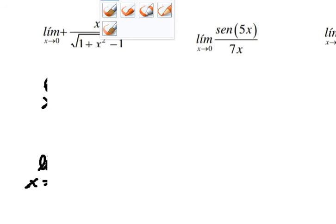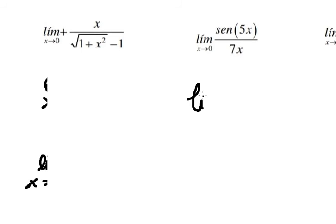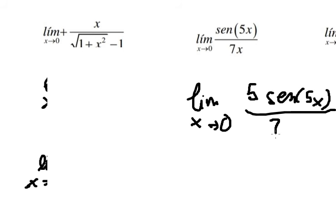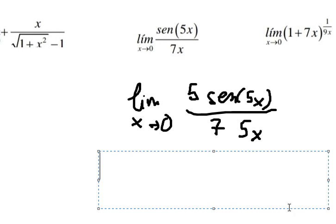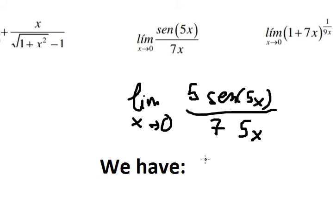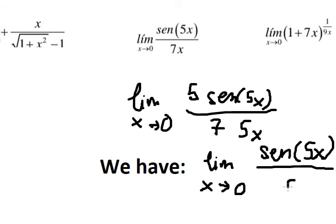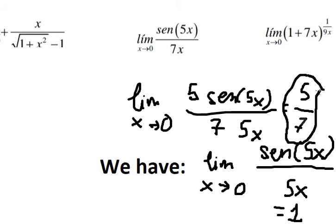Question number 3. We multiply by 5 in the numerator and denominator. Using the standard limit formula that sin(5s) over 5s equals 1, we apply that identity. The remaining factor gives us 5 over 7. Since the sin(5s)/5s part equals 1, the final answer is 5 over 7.